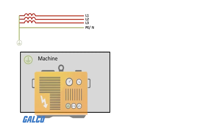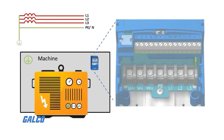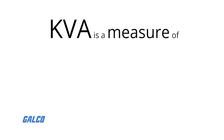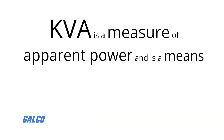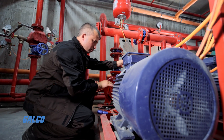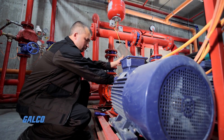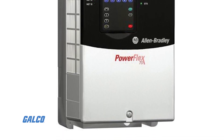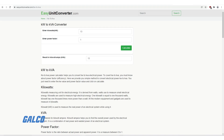To find the right size generator for your variable frequency drive, you will need to know the kilovolt amperes, or KVA, power rating of your system. KVA is a measure of apparent power and considers the inefficiencies present in a system. Kilowatts is a more common power rating, and it should be easy to find your drive's kilowatt rating. From there, an online KVA calculator can be used to convert your drive's KW rating to a KVA rating.